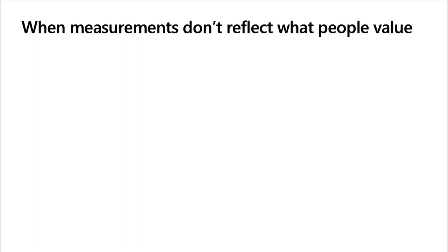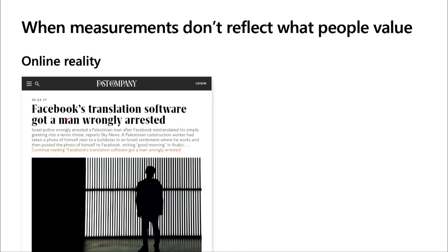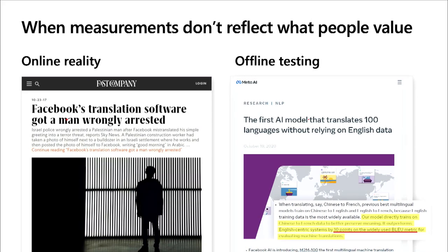When measurements don't reflect what people need and value, bad things can happen. A Palestinian man's 'good morning' post in Arabic was translated to 'attack them' in Hebrew, and he was subsequently arrested. Facebook was at least partly evaluating their translation feature with a metric called BLEU — an industry standard that counts shared words across sentences without considering meaning. But meaning was precisely what needed to be preserved.